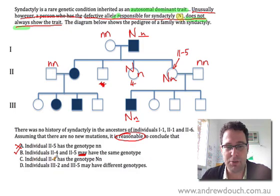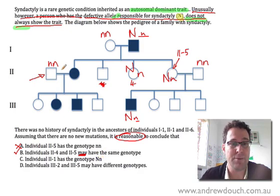What about the next one? Individual 2-1, that's this guy here. Individual 2-1 has the genotype big N, little n. Well, no, we've decided that the genotype here must be little n, little n, because there's no history of syndactyly in his family. So we're going to say that that's not a reasonable suggestion based on what they've told us.